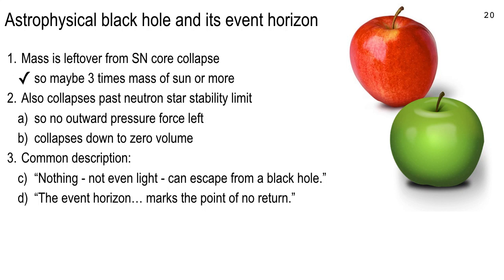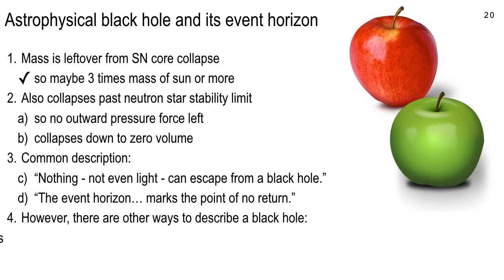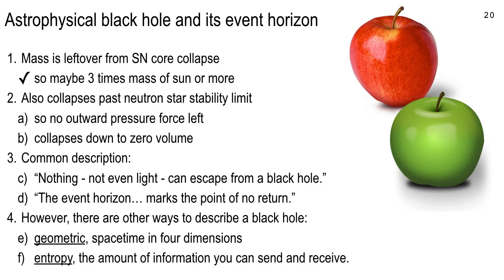If you're outside the event horizon, you can still get sucked in if you screw up. But if you have a good enough rocket, you can boost on out of there — at least you can orbit. There are tidal effects: you may be so close you start getting pulled apart and turned to spaghetti. The event horizon is the point of no return. The way to describe the black hole is geometric. The other way is in terms of entropy — the amount of information you can send and receive as an observer — and we'll talk about that on Thursday.